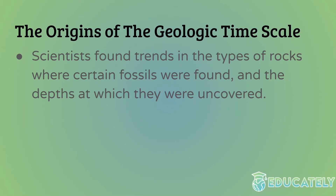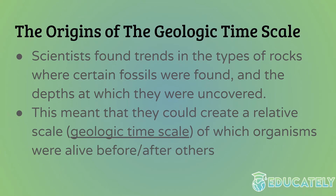The origins of geologic time: scientists found trends in the types of rocks and where certain fossils were found — the depths at which they were recovered, different patterns. This meant they could create a relative scale of which organisms were alive before and after others. If you look at a global picture of scientists excavating fossils, ones always found at super deep depths versus another organism found less deep — you can infer that the species found deeper is going to be older.